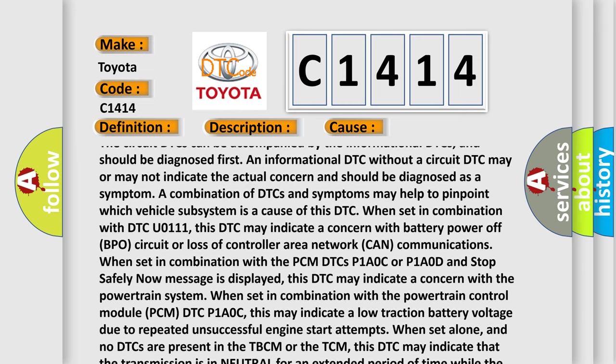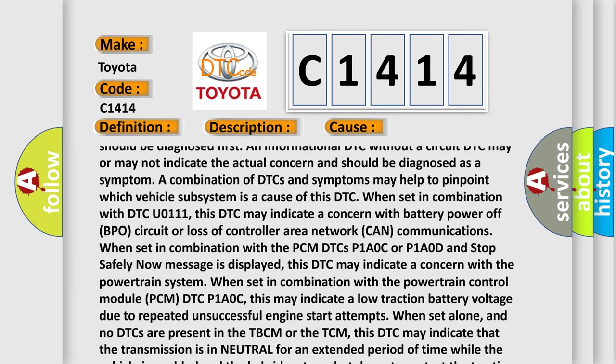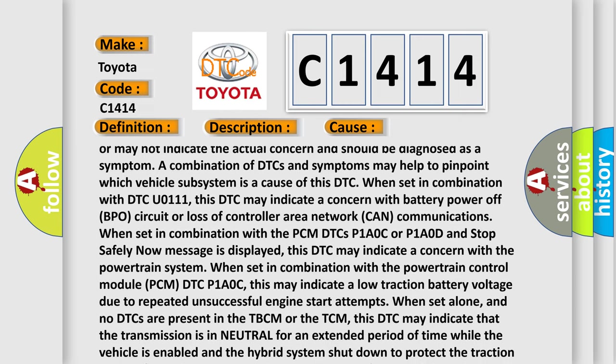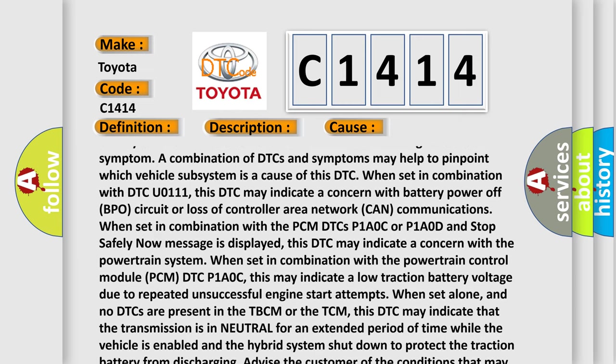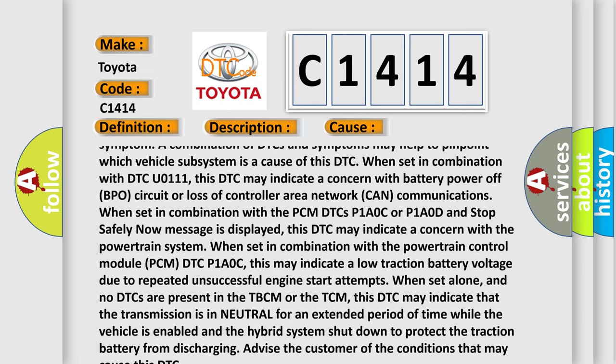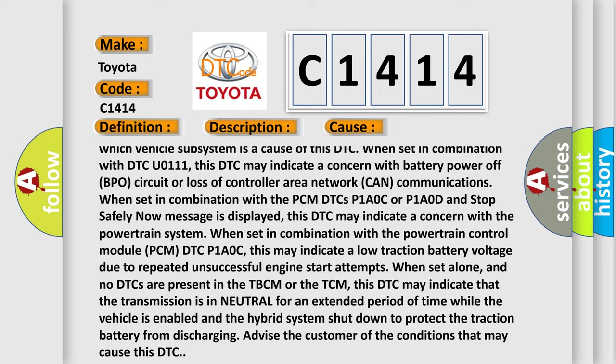When set in combination with DTC U0111, this DTC may indicate a concern with battery power of BPO circuit or loss of controller area network (CAN) communications. When set in combination with the PCM DTCs P1A0C or P1A0D and stop safely now message is displayed, this DTC may indicate a concern with the powertrain system.